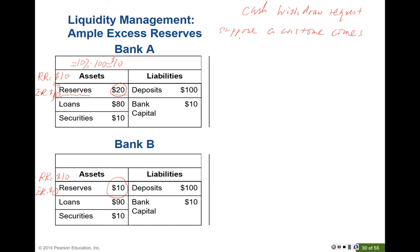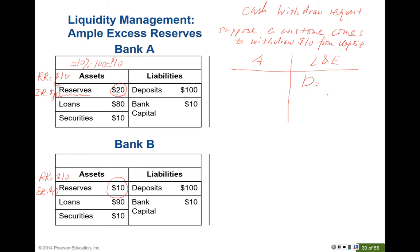Suppose a customer comes to withdraw $10 from their deposit. What happens to each bank? For Bank A, on the liability and equity side, the deposit reduces by $10, so the new deposit is $90. Bank capital remains at $10.